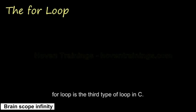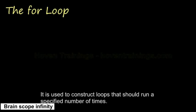For loop is the third type of loop in C. It is used to construct loops that should run a specified number of times.